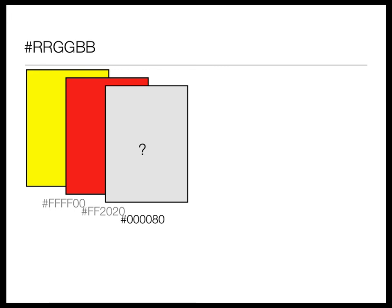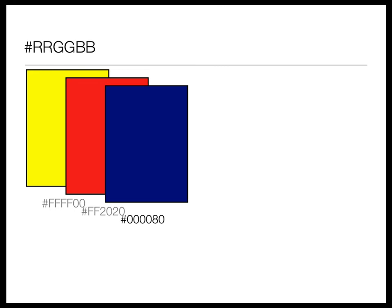Looking at the next code: does any channel dominate? The last part is blue — blue is winning because the other two are zero. So it's certainly blue. Now is it a bright full-on blue or a dark, hardly-there blue, or somewhere in the middle? 80 is pretty much halfway, so it would still look dark. Certainly it's going to be blue.